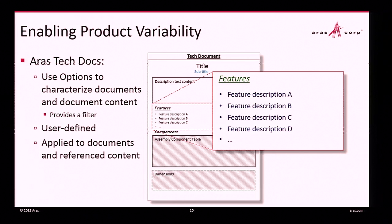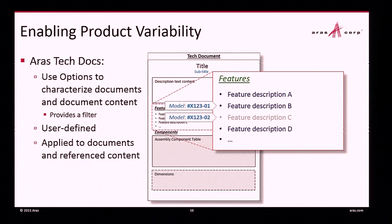We support the ability to identify characteristics at a granular level within the document's content. For example, I may have a features list that I associate with a particular model. You can define whatever characteristics you want and make associations between those characteristics and elements of the document. When you publish — say to a website — and someone says they have Model X, the publishing process can deliver content specific to what they want. If an element is a numbered list, the list updates automatically with no gaps.